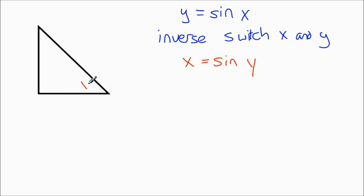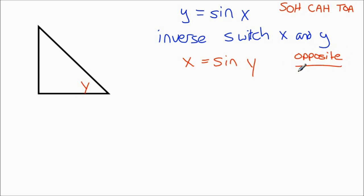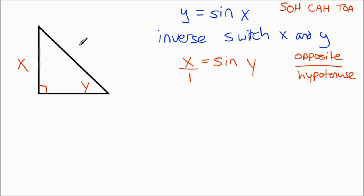I'm going to label this angle here y. Remember SOHCAHTOA — sine is opposite over hypotenuse. So we have our right triangle here, and sine of y is opposite over 1, because anything over 1. So this is going to be opposite over hypotenuse.